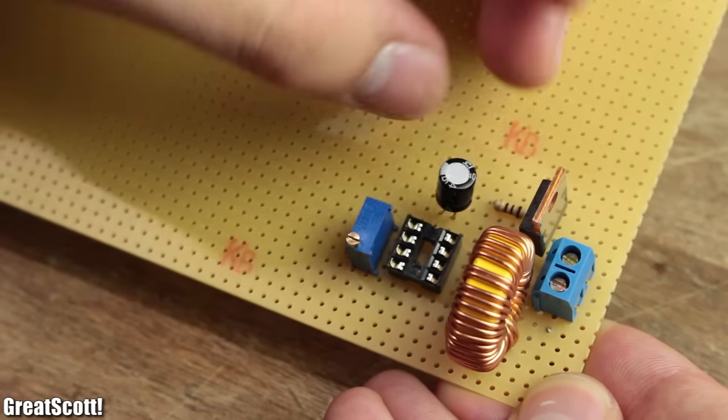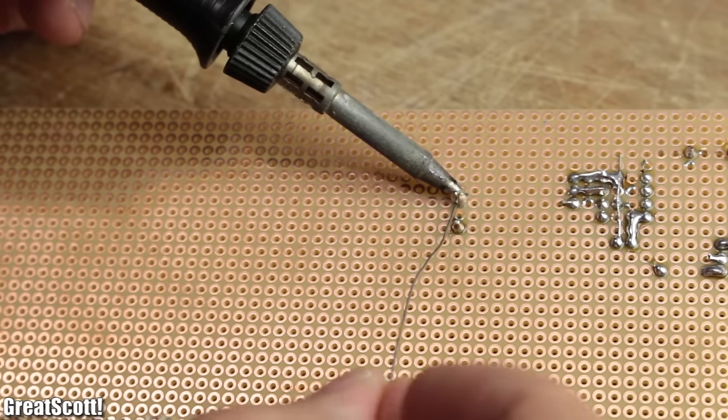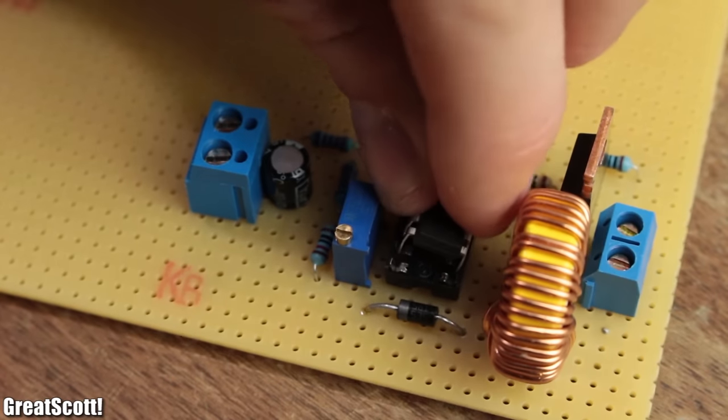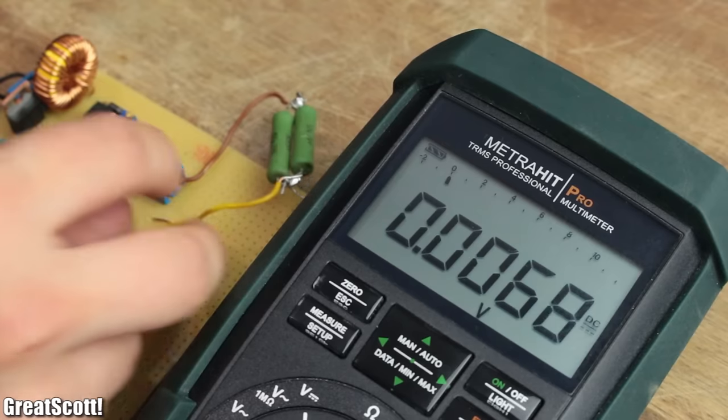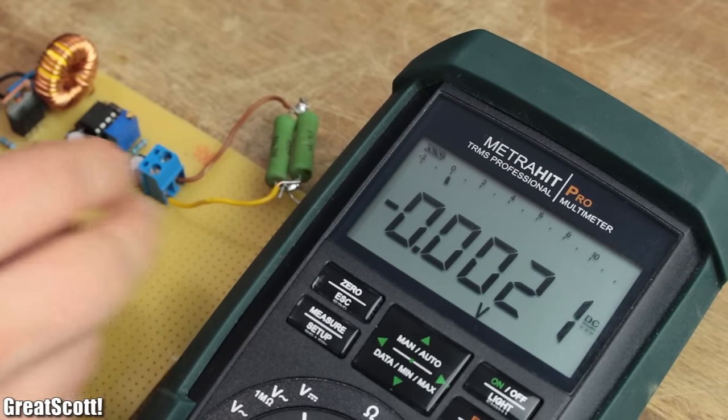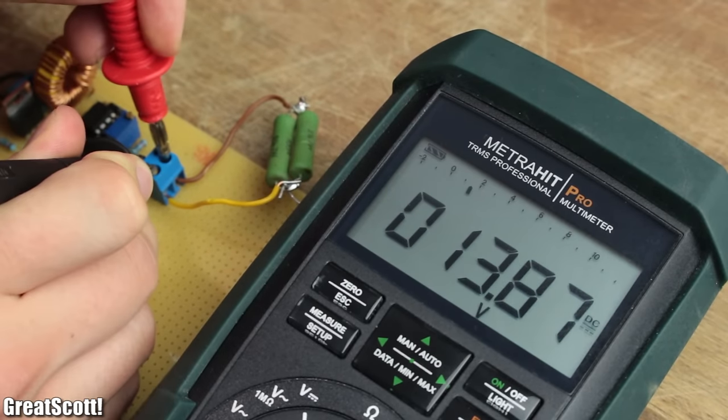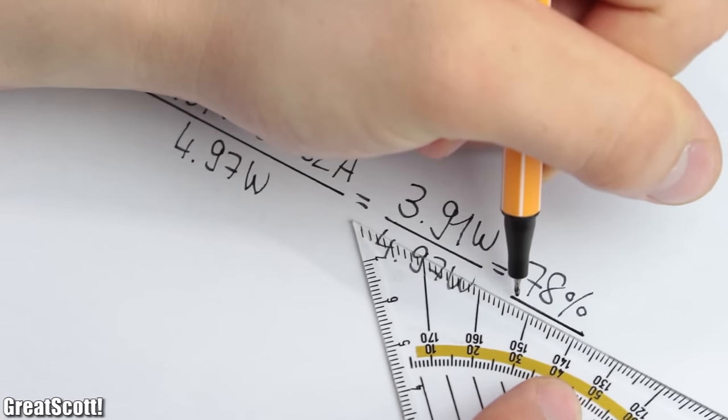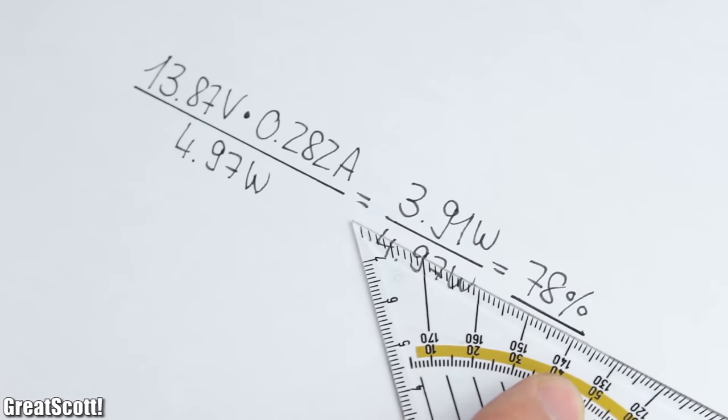If you want to build something similar, you can find all the information about this project—like the code, additional pictures, and the schematic—in the video description. After the circuit was complete, I tested it out by hooking up a 50 ohm load to the output at a voltage of around 14 volts and reached an efficiency of 78%, which is actually not that bad.